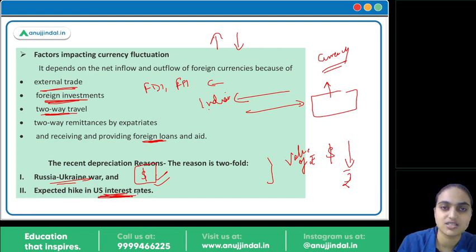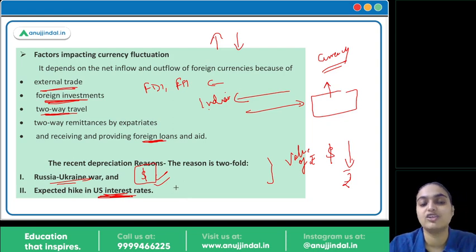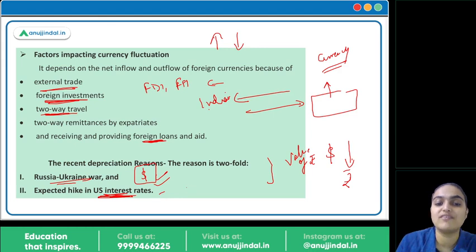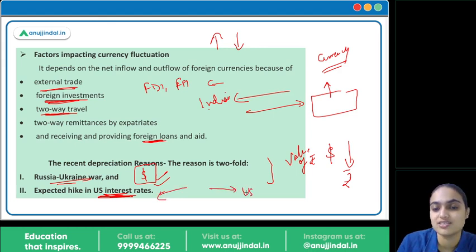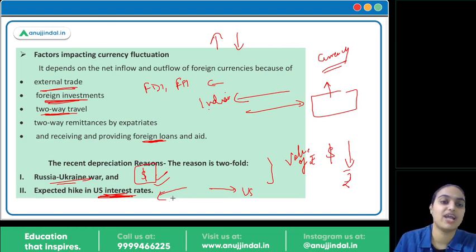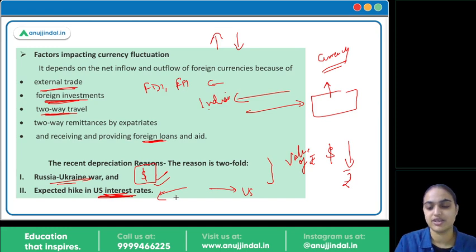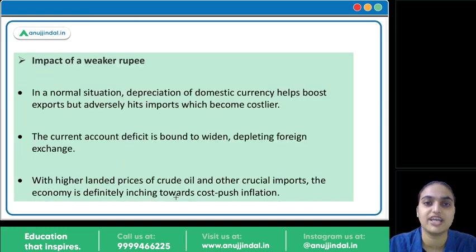Second reason is expected hikes in US interest rates. The US central bank is expected to increase interest rates. When US interest rates rise, people who invested in countries like India will take their investments back to the US since a higher rate of interest is offered there. Foreign outflows cause demand for rupee to fall and demand for US currency to increase, leading to rupee depreciation.